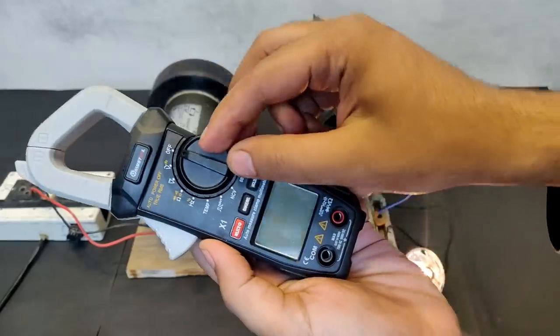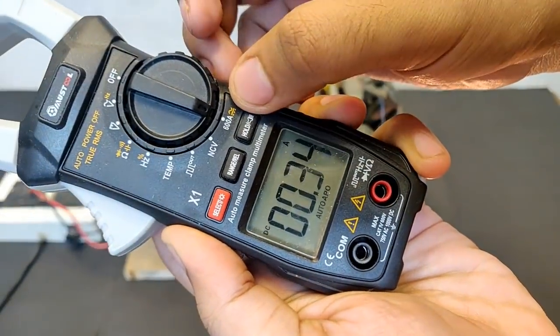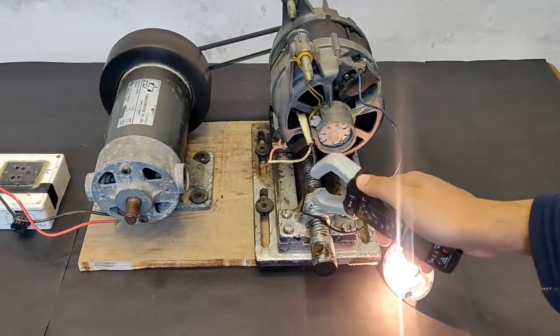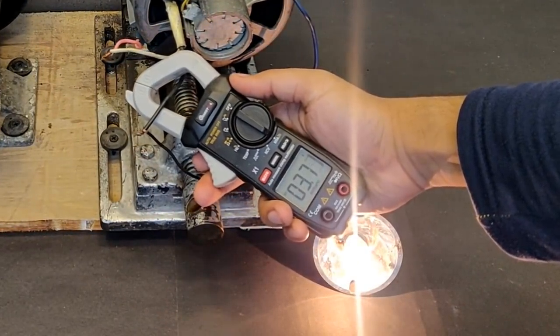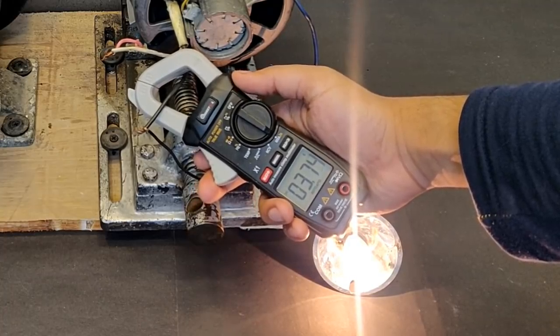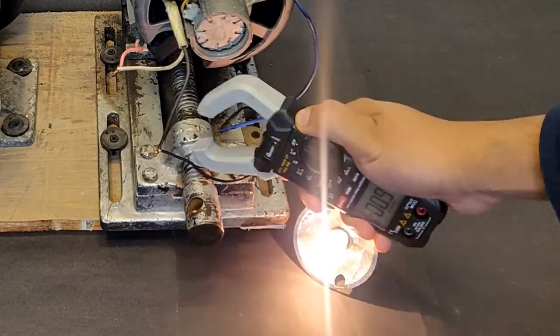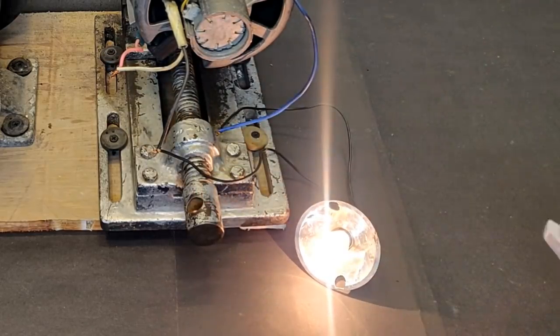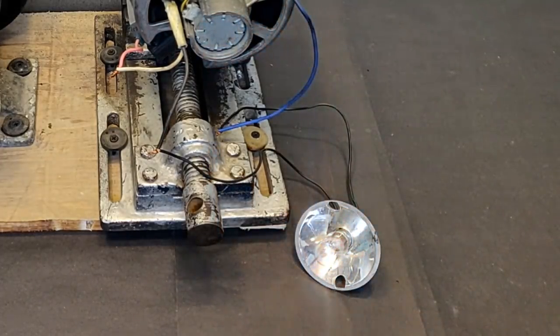Let's measure the generated current. I am going to have to control the current. 3.70 amps. DC amps. Haha. Cool, right? Cool, right? Cool. 3.70 amps.